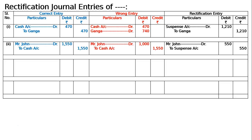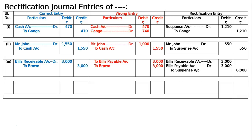Third error: bills receivable from Brown of 3000 was posted to the credit of bills payable account. The correct entry is bills receivable account debited to Brown 3000, but by mistake it was posted to bills payable in the credit. Hence the rectification entry is: bills receivable account debited 3000, bills payable account debited 3000, to suspense account 6000.